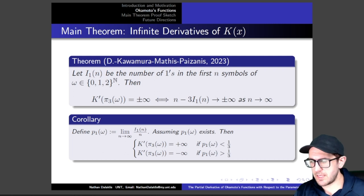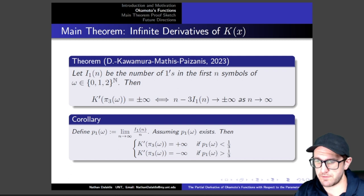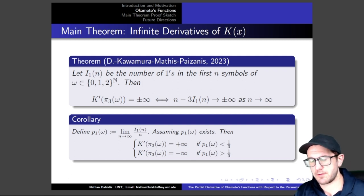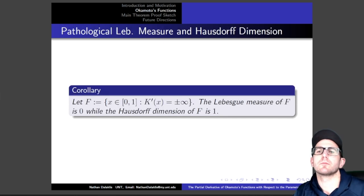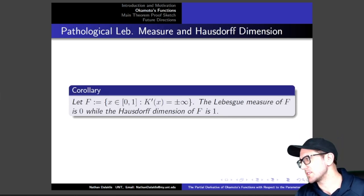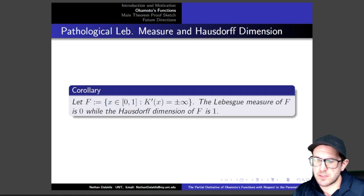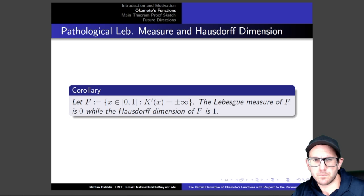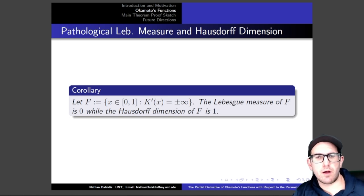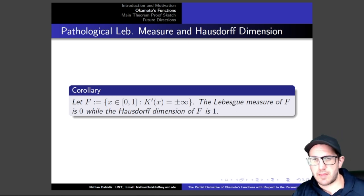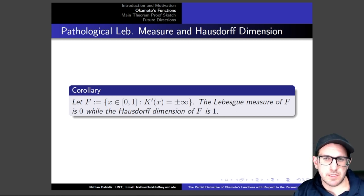The key thing here is that K is a partial derivative, but when we're talking about K prime we're talking about the derivative of this partial derivative. Another really cool finding: while doing this, we found another example of a set that has Lebesgue measure 0 while having Hausdorff dimension 1, and this used results about random walks. The set of all points that have positive or negative infinite derivative has Lebesgue measure 0 while its Hausdorff dimension is 1.